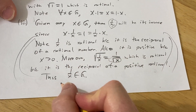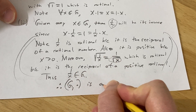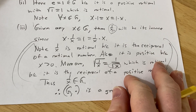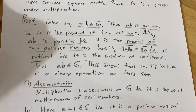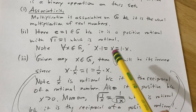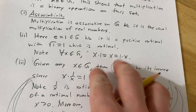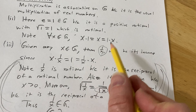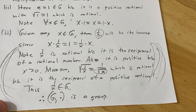We've satisfied all the criteria. Therefore, G under the operation of multiplication is a group. Basically, you just have to justify why it's a binary operation and then verify associativity, the existence of an identity, and that every element has an inverse. I hope this video has been helpful to someone learning group theory. Good luck.